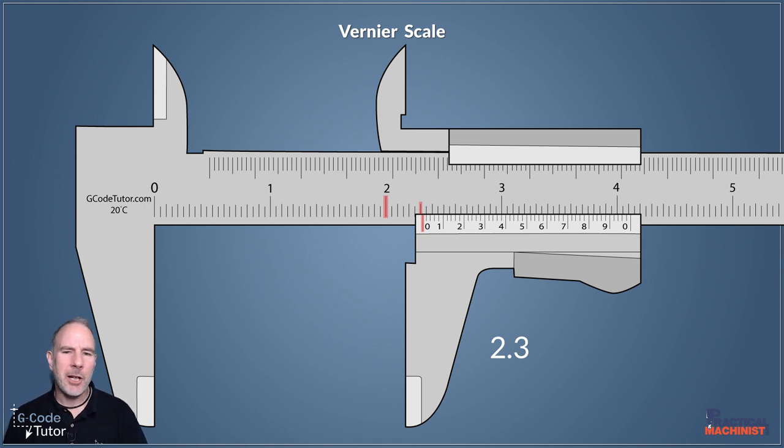But where that doesn't perfectly line up, we need to keep sighting along and look for a line that does line up. Somewhere between one and two on this bottom scale, we can see this line lines up perfectly with the one above it. From that we can see we are looking at 16. Counting along the lines, we can tell that those two numbers are 16 on that bottom scale where those lines line up. So now we know our reading is 2.316 of an inch. We can get right down to a thousandth of an inch quite easily with these Vernier scales.